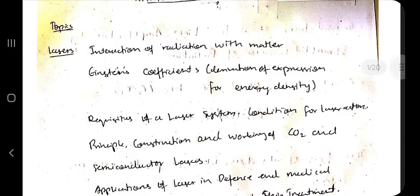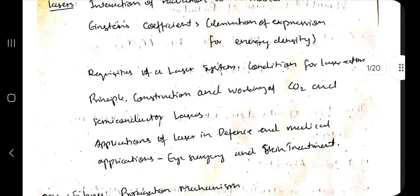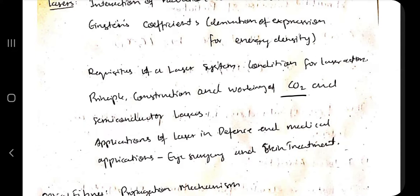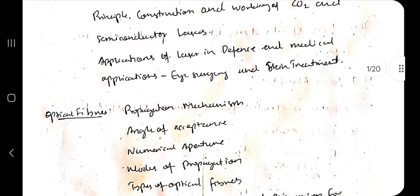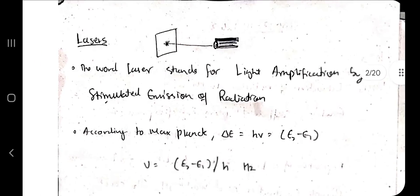Hello everyone, today in this video we'll be discussing the third module of 21 PHY12, and in this module we have the main topic: lasers and optical fibers. In lasers, the main topics are Einstein's coefficients, derivations, the working of CO2 laser, and semiconductor laser which is gallium arsenide. So let's get started with the topic lasers.